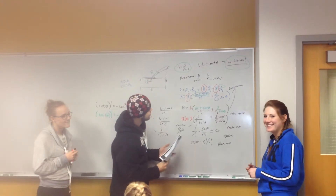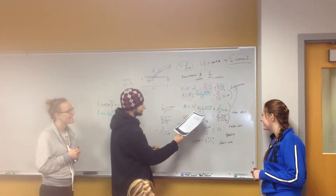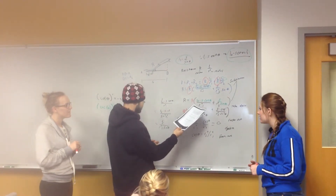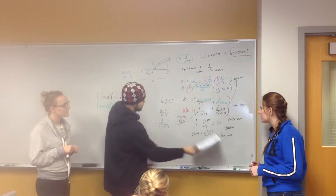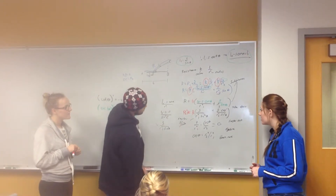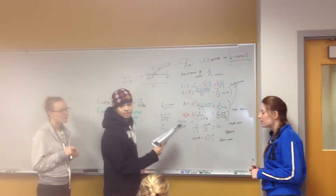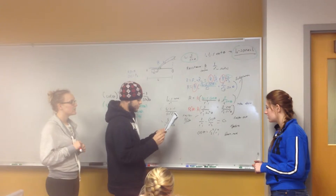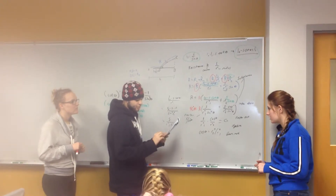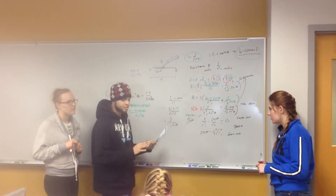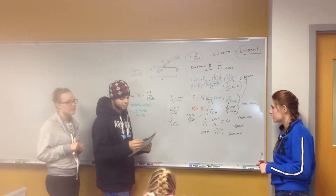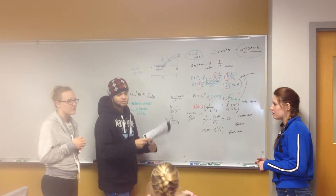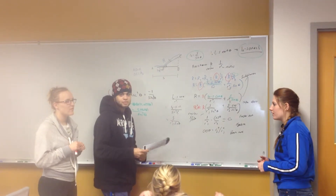And then we get to here, and at that point we can take the derivative of everything. Why would you do that? Because they want to find the minimum amount of resistance, and in order to find minimums you take the derivative and set it equal to zero.